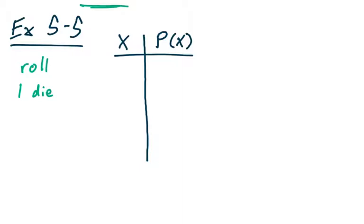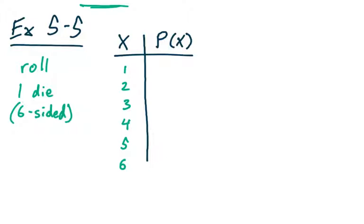Example 5-5 from page 266 says: find the mean of the number of spots that appear when a die is tossed. We're rolling one six-sided die. The number of spots are one, two, three, four, five, six, and we assume they're equally likely. So the probability for all of these is one over six. Next, we're going to insert an extra column for x times P(x), and go ahead and fill in all of these values. I'm not going to simplify any of these fractions, because at the end we're going to total them all up.